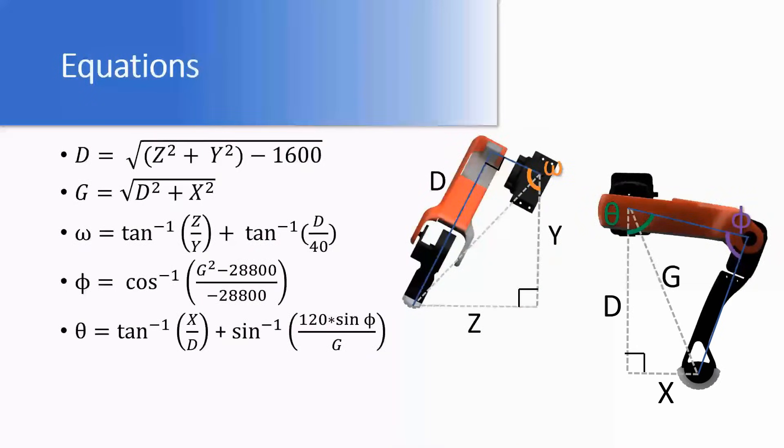These are the equations needed for the inverse kinematics for a single leg on spot micro. All these equations are in terms of X, Y, and Z.